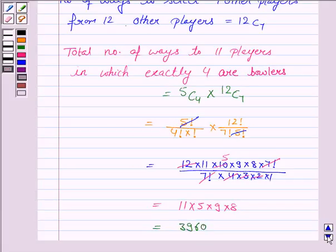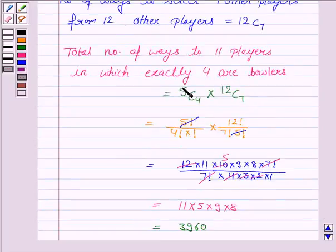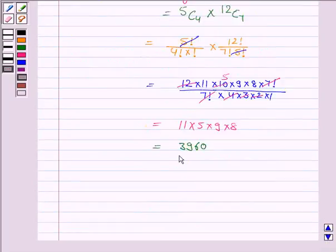Hence, the total number of ways to select 11 players in which there are exactly 4 bowlers is 3960.